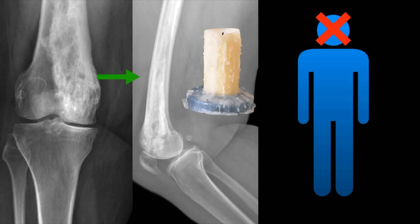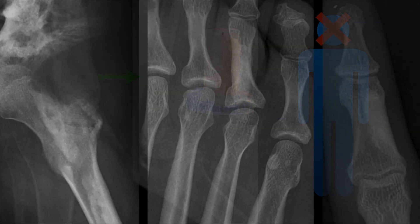There is hyperostosis, predominantly periosteal, with an undulating appearance along the cortex that resembles dripping candle wax. It may also be osteomedullary with intermediary extension, linear with intraosseous sclerosis, or have rounded osteoma-like foci of sclerosis.